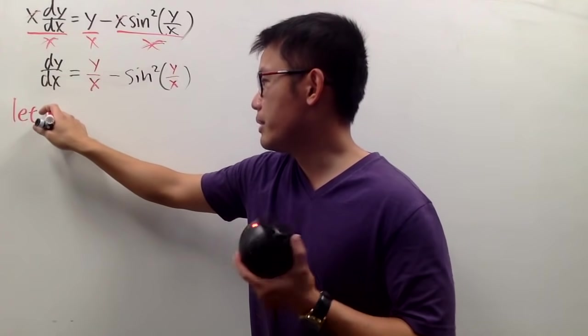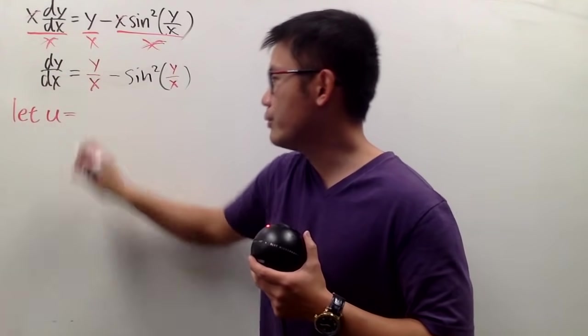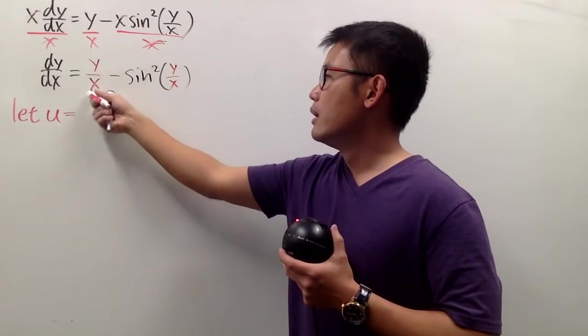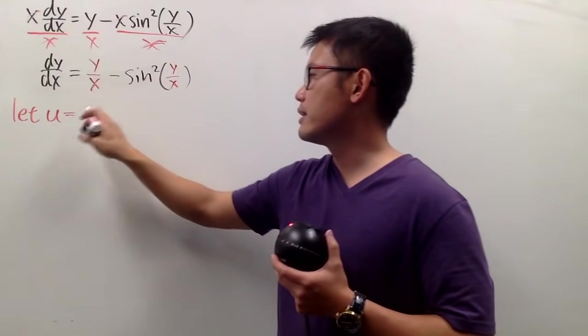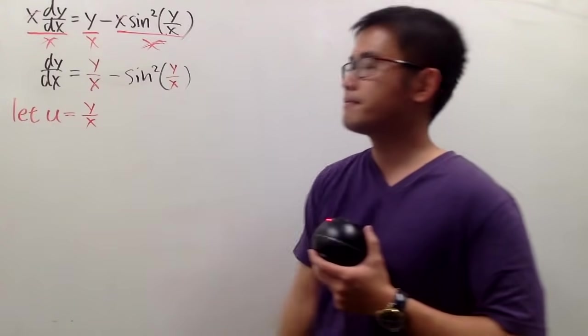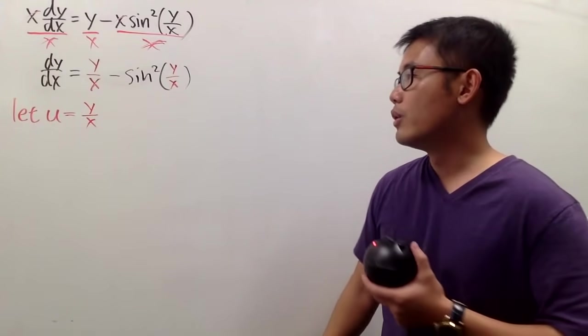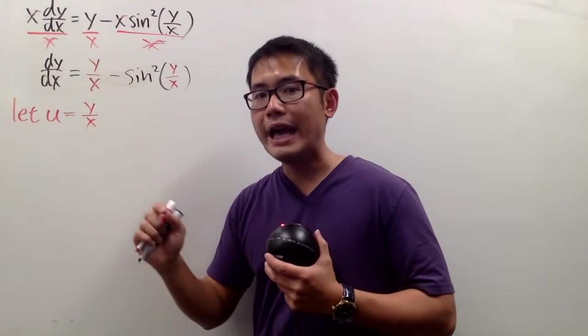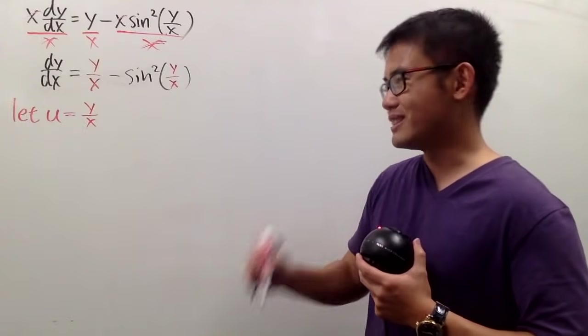Let's say that you can pick any letter that you would like. Let me put down u. And just let u, being a new variable, new function actually. In this case, let's pick this to be y over x. And then to continue, what we'll do is, we'll just try to write everything in terms of u and x only. So, no more y.